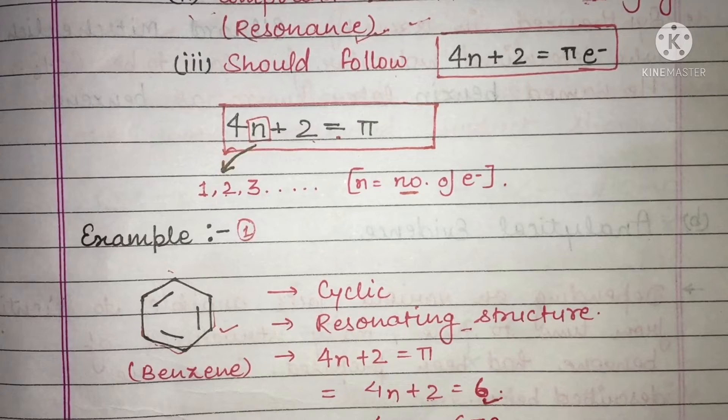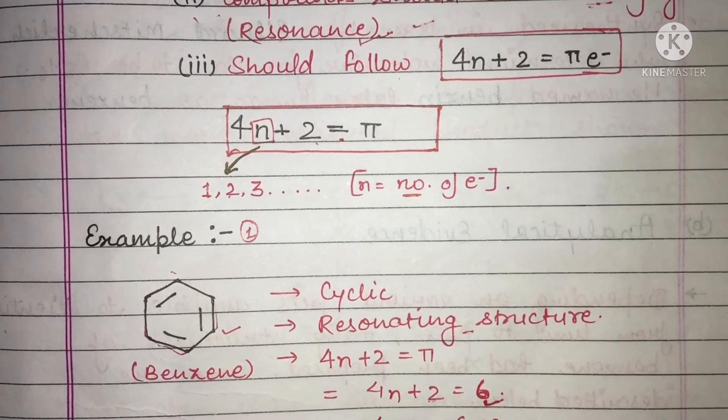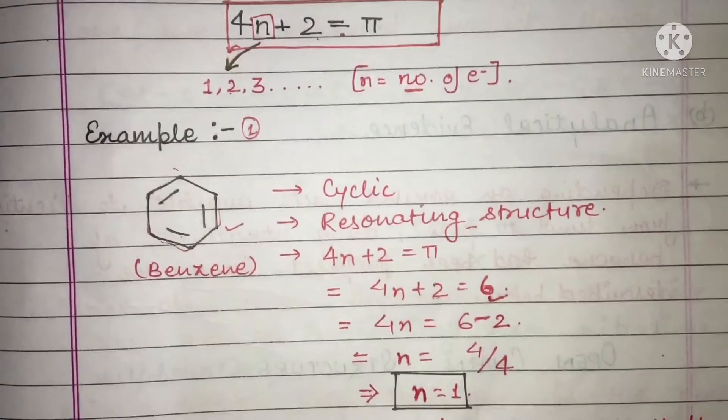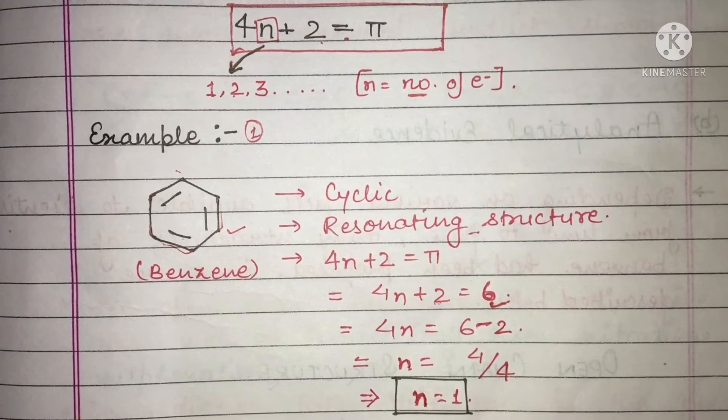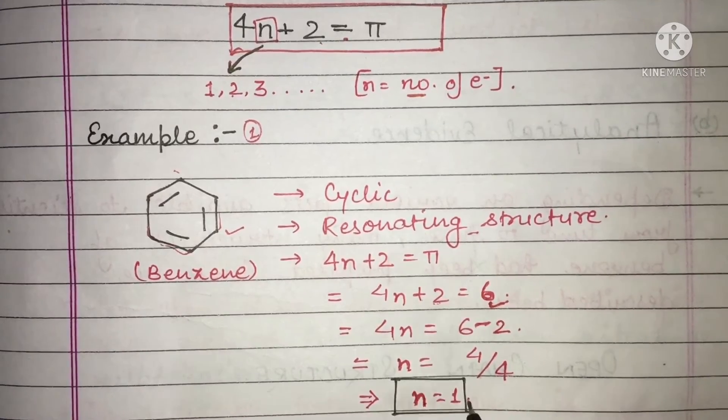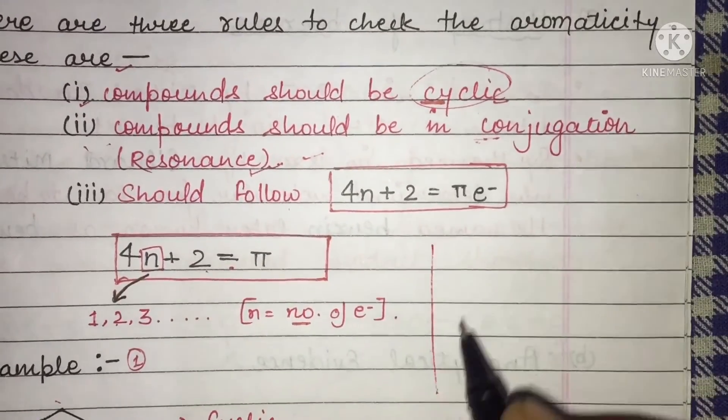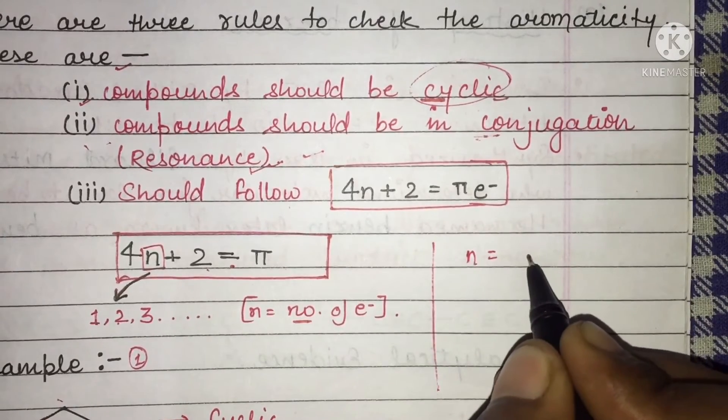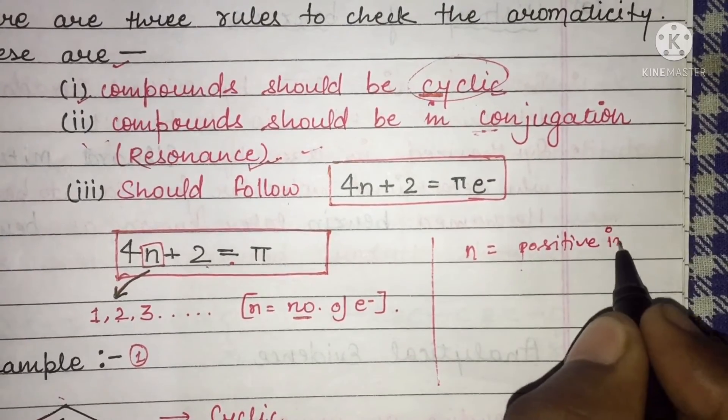We have π electrons, so π equals 6. Divide by 4, we will get n is equal to 1. Since this structure follows all three rules, hence it is an aromatic structure or compound. N should be a positive integer.